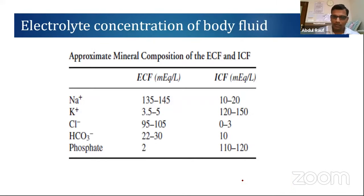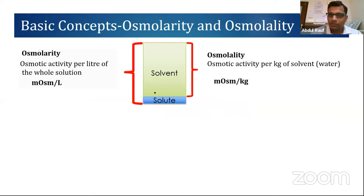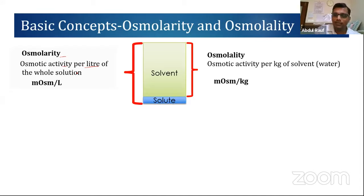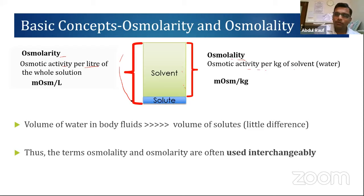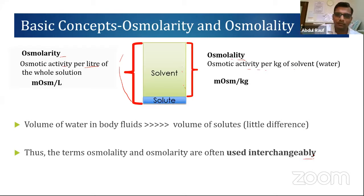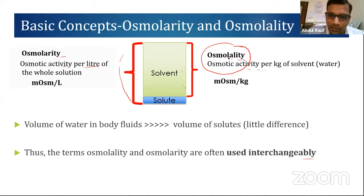The predominant ion in the extracellular fluid is sodium, and the predominant ion in the intracellular fluid is potassium. Osmolarity means the osmotic activity of solutes per liter of solution, and osmolality means osmotic activity per kilogram of solvent. Practically, the volume of water far exceeds solute volume, so these terms are used interchangeably. For body physiology, we use the term osmolality.